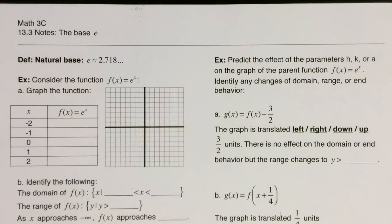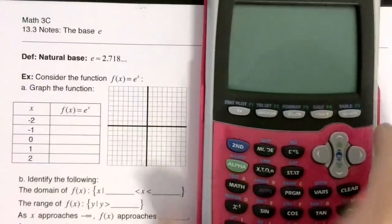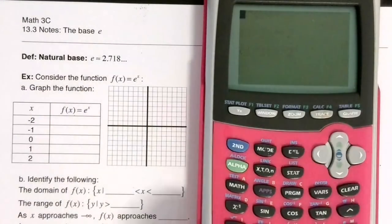Alright, today 13.3, the base e. So today we are going to talk about a very special number in math called the natural base. It is notated with the letter e and it's approximately 2.718.